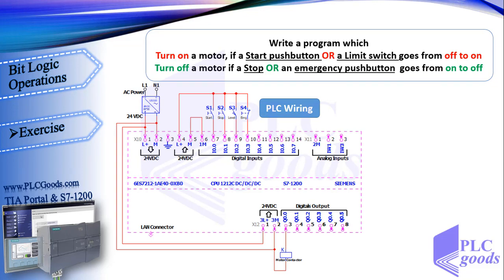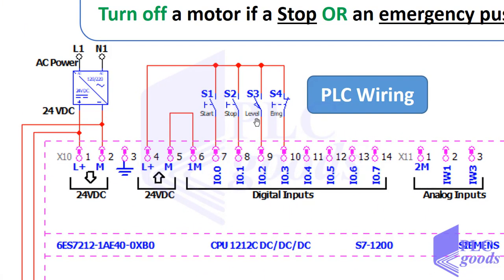Now let's do a simple project. I want to write a program which turns on a motor if a start push button or a limit switch goes from off to on, and turns off the motor if a stop or an emergency push button goes from on to off. S1 and S3 are normally open push buttons — S3 is activated by a level sensor. S2 and S4 are used to stop the output, and S4 is a normally closed push button.